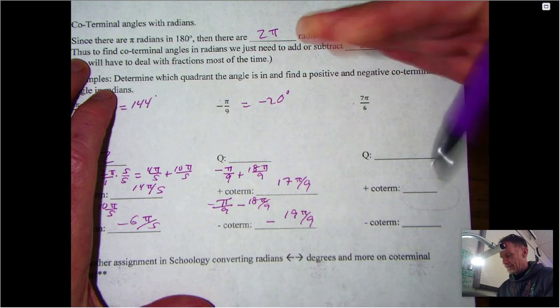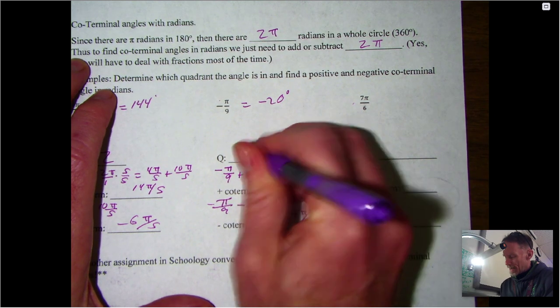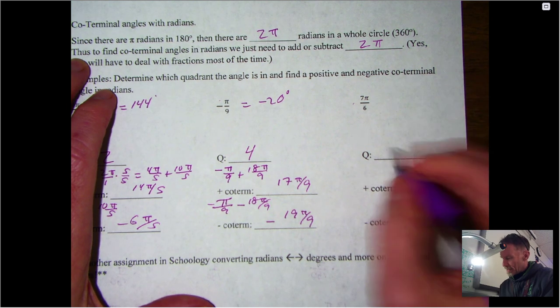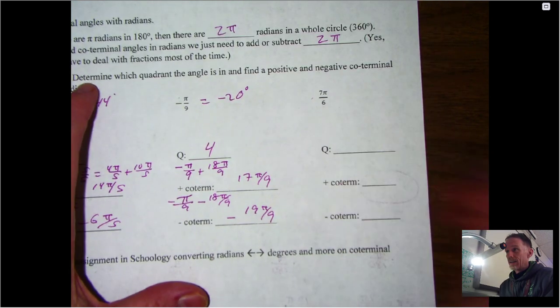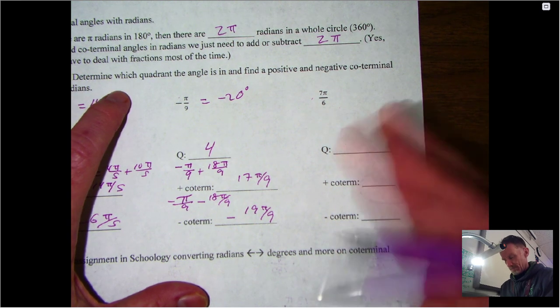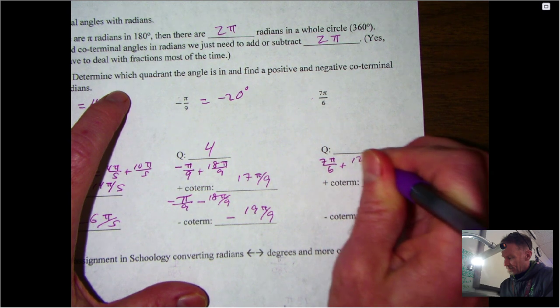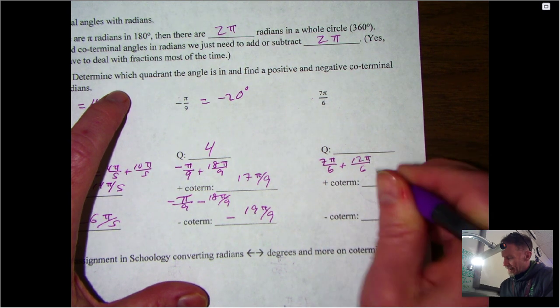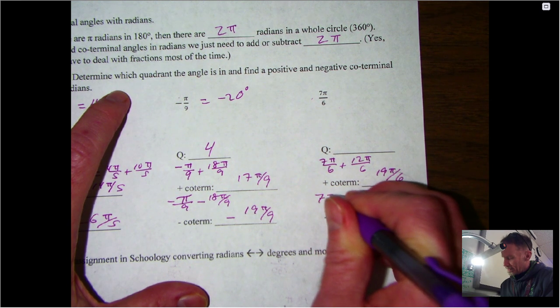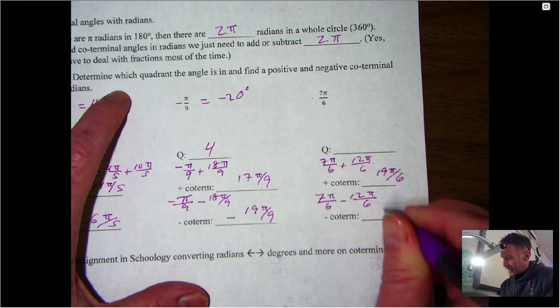And then for 7π over 6, we're going to add 12π over 6—again, adding 2π—so that's going to be 19π over 6. If I subtract that same thing, I get -5π over 6. For the conversion, 7π over 6 is equal to 210 degrees, so that's in quadrant three.